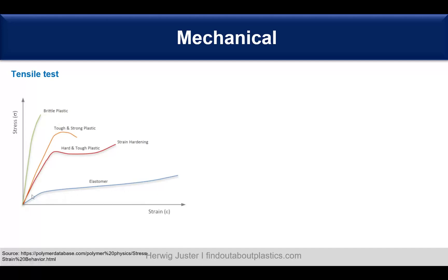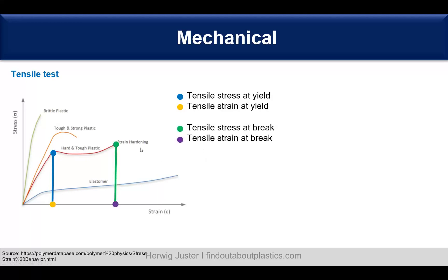For example, an elastomer has a low stress but really high strain. The red curve represents a hard and tough plastic, typical for polycarbonate — we have yielding and then break. There is also a tough and strong plastic, and then the brittle material, which doesn't even reach the yielding point. The blue point gives you tensile stress at yield together with tensile strain at yield, and the green point gives tensile stress at break and tensile strain at break. So when you read those on the TDS, you already know what they mean and can get a feel for how the polymer is built up.